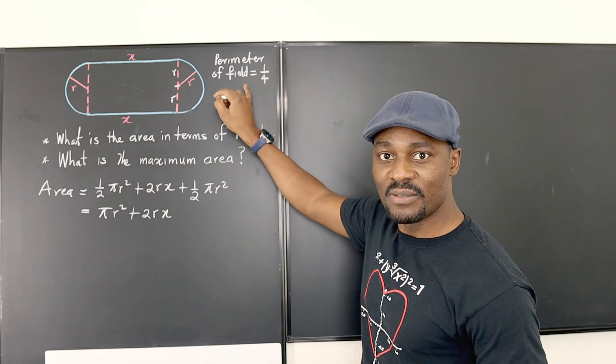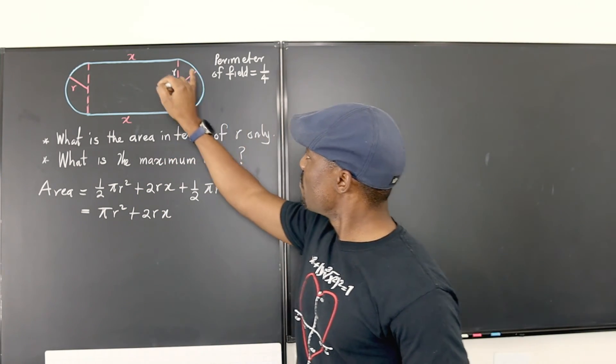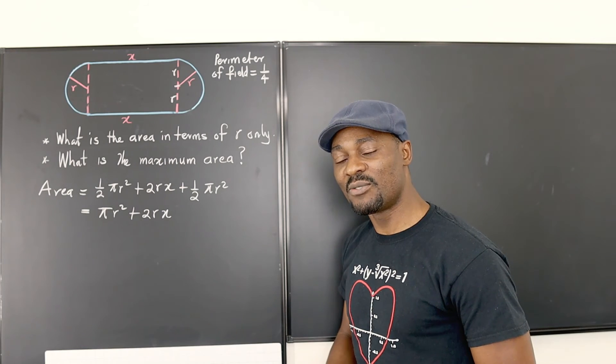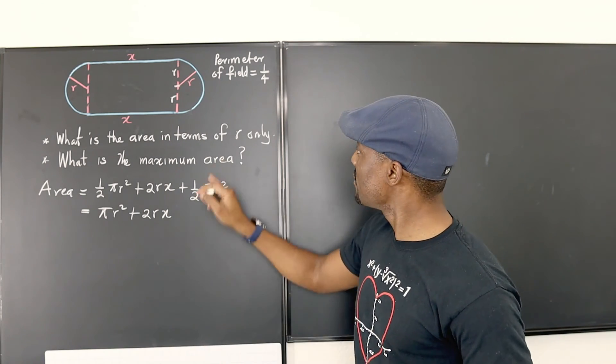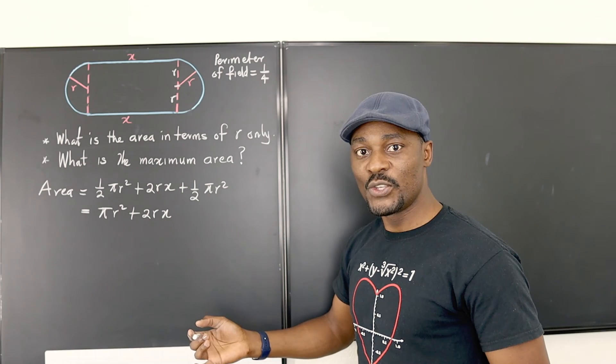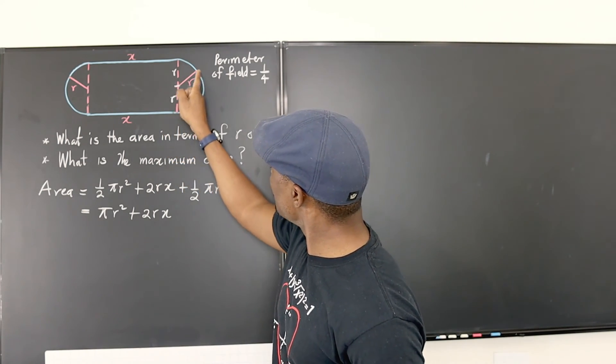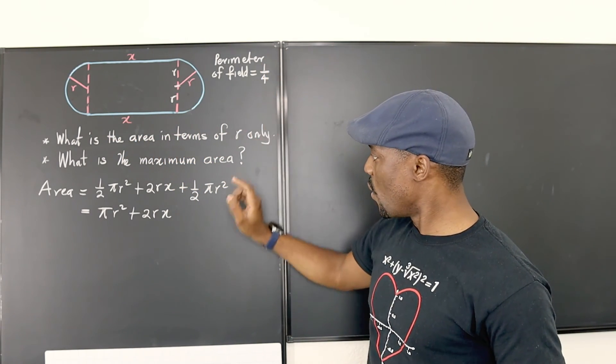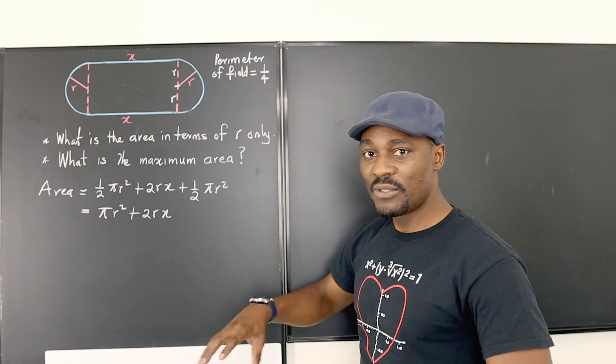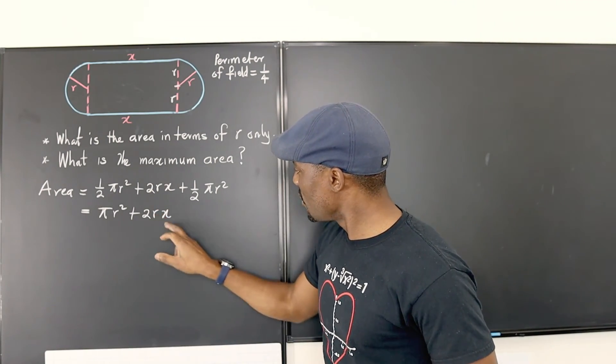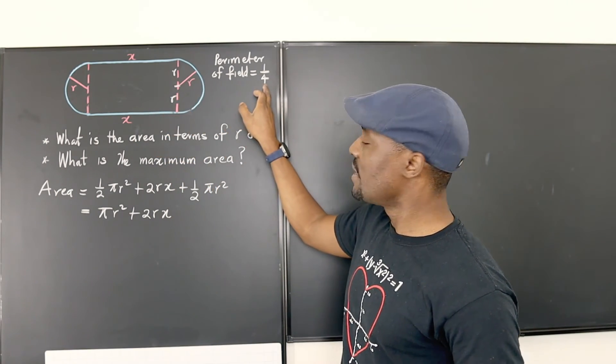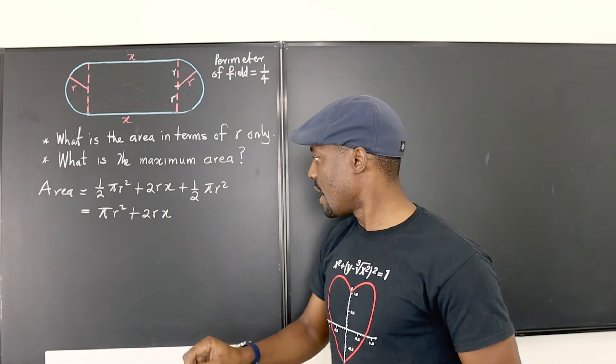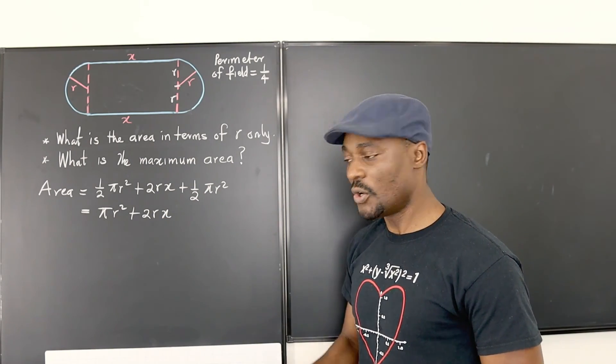However, they gave you one condition. The condition is that if you run around this field, you must have run a quarter. Well, it's a quarter mile, but I don't care about the unit right now. So you must have run one quarter of a mile. So it means that if I go around this field, the perimeter of this field is going to be 1 over 4. So in order to get rid of x, we have to find a way to isolate x, connect x to r using this information and then isolate x. Whatever we get will be in terms of r and we can bring it here and replace this. So let's do that.